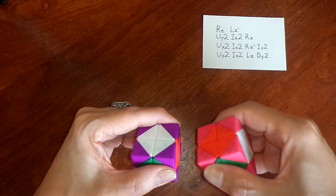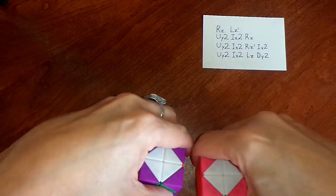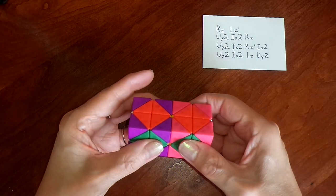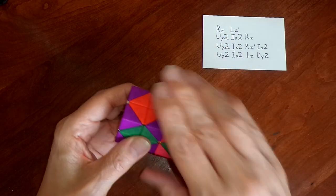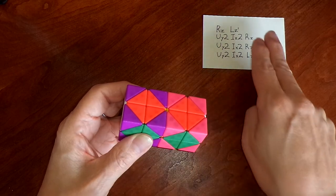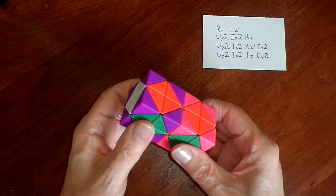So right z and left z prime, these together, are just a simple rotation. Then three sets of up y2 and in x2 with some extra bits on the end. So they go like this.